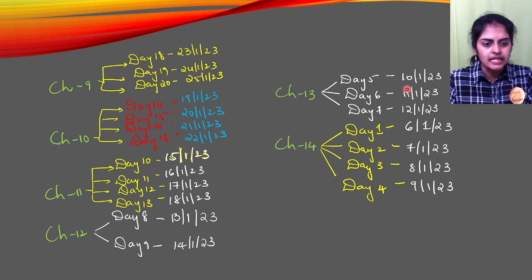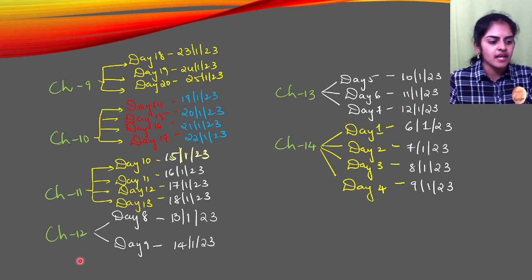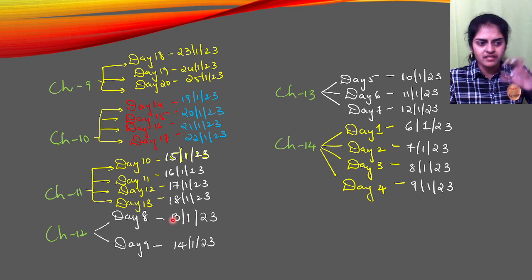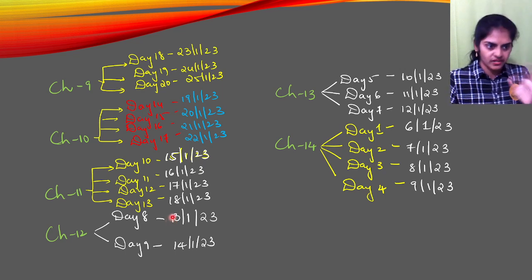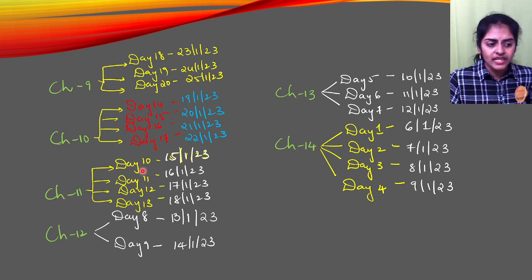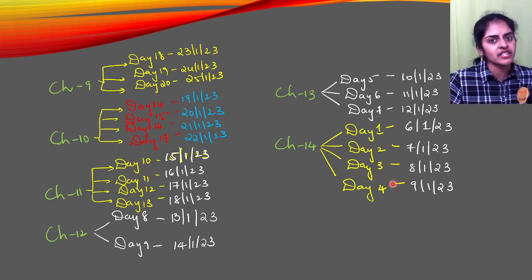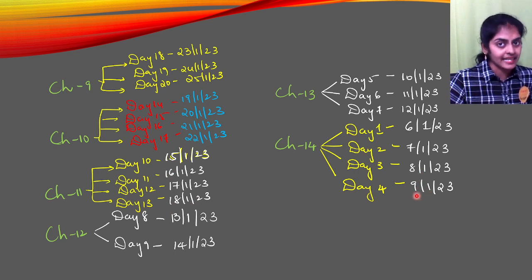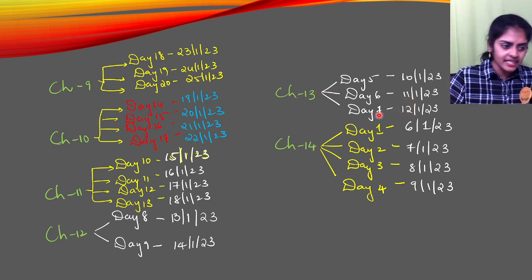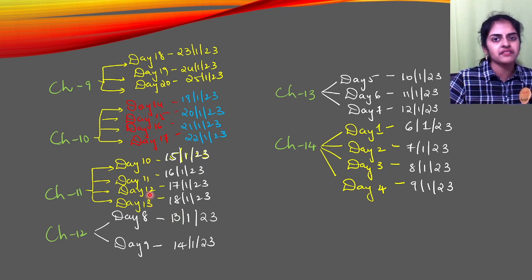Chapter 12 — Applications of Trigonometry — is a very small chapter, so I've given only two days, which is more than sufficient. With Sankranti in between, I've kept shorter chapters and shorter videos so you can enjoy the festival and still study a little. Then Chapter 11 gets four days — Day 10 to Day 13 — because trigonometry has very important questions we must cover thoroughly.